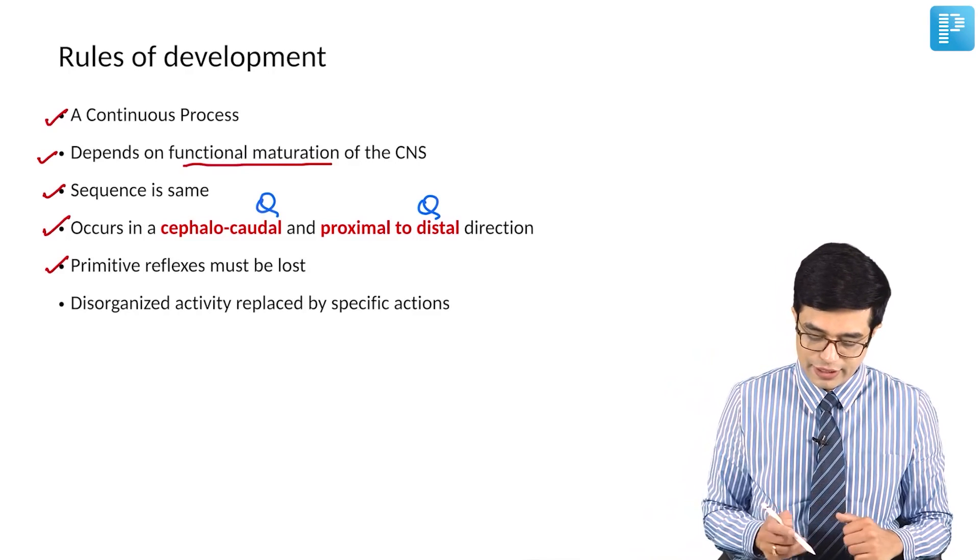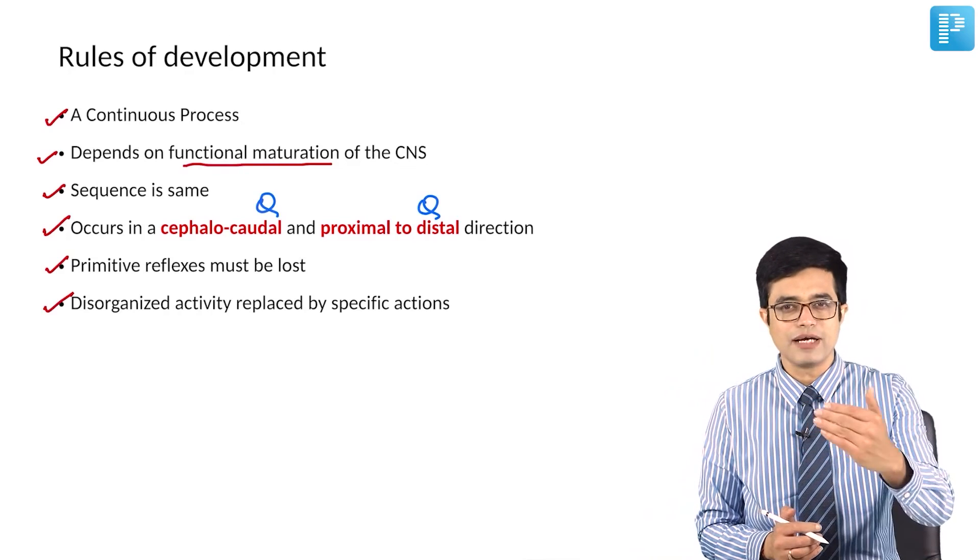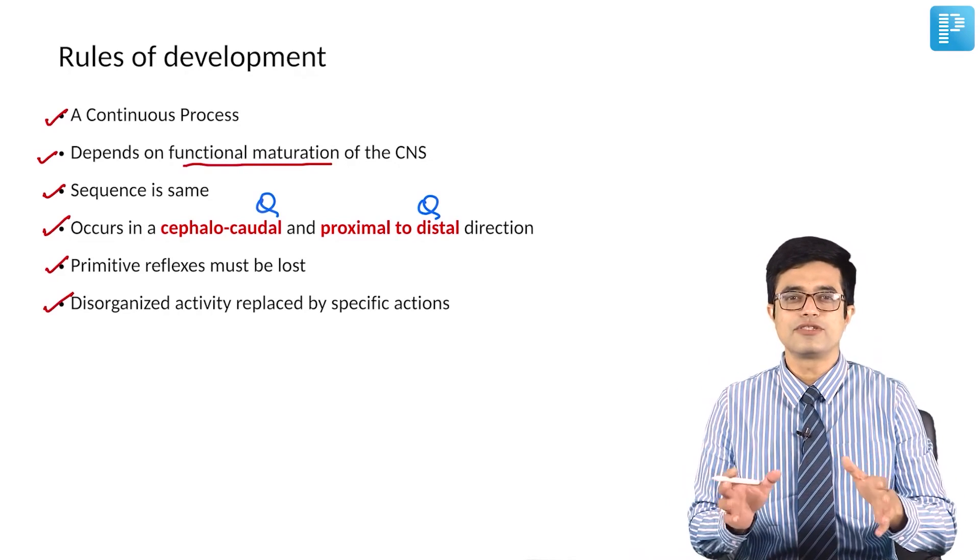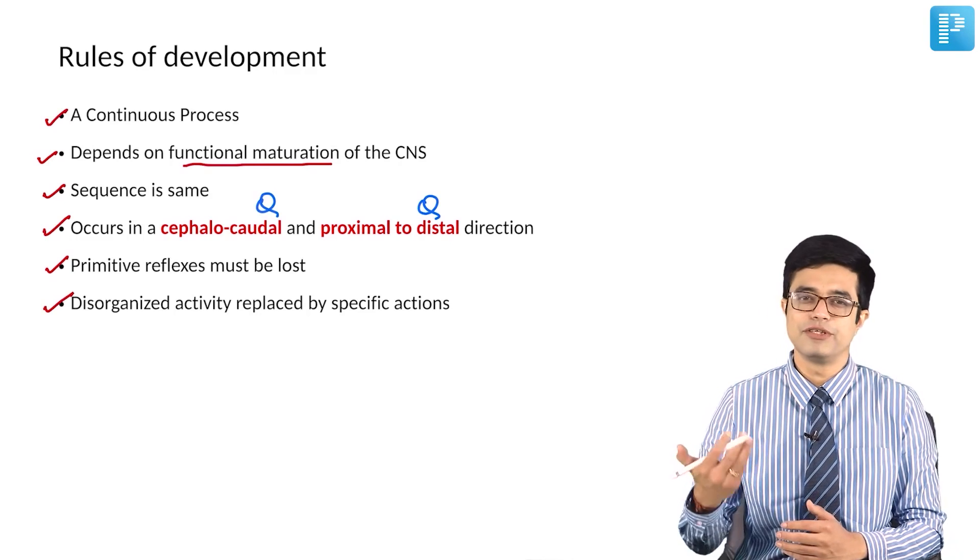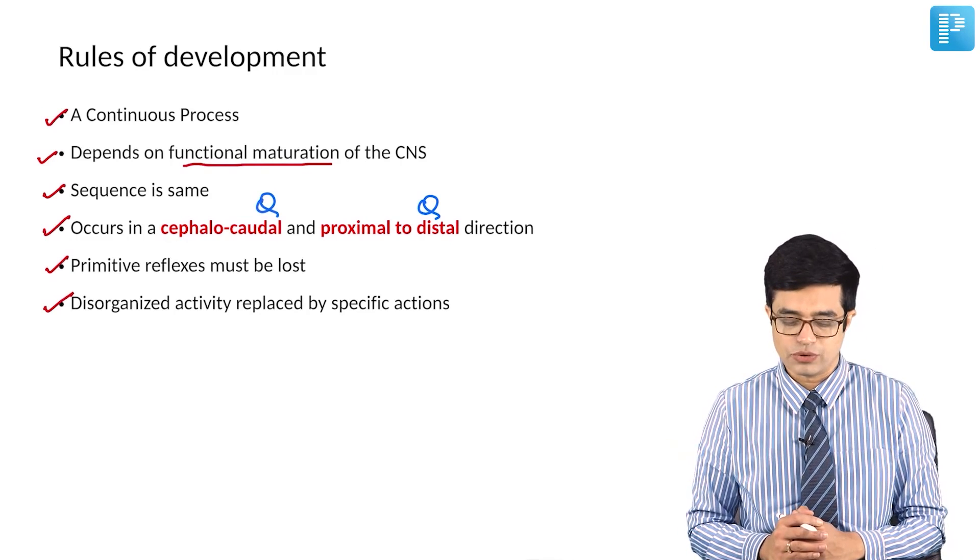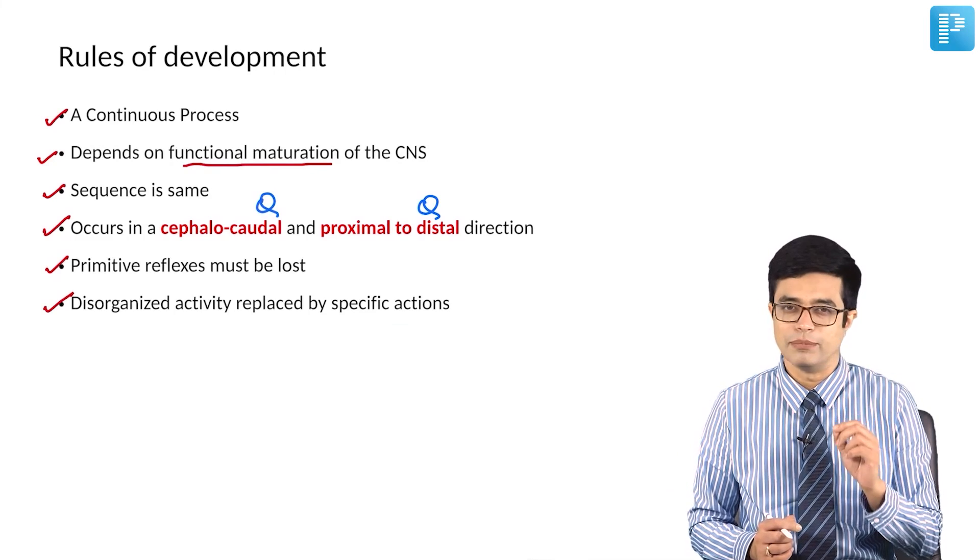And sixth is disorganized activity is replaced by specific actions. So as development progresses, the disorganized activity becomes more specific, more goal-oriented. It is something you can already imagine. So these are the six rules of development, the key words you need to remember.